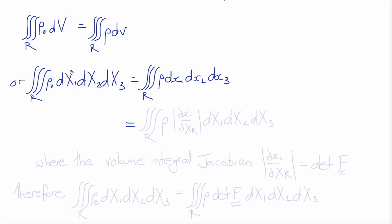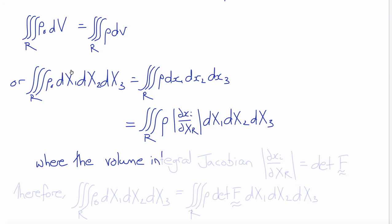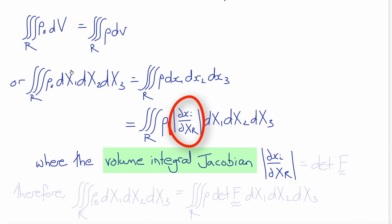We need to convert deformed coordinates to undeformed coordinates in our integral. We do that using the partial derivatives in a chain rule, del x_i / del X_R. The expression you get when converting from d(x_1) d(x_2) d(x_3) to d(X_1) d(X_2) d(X_3) is actually the determinant of del x_i / del X_R, which is known as the volume integral Jacobian. As you can see, it equals the determinant of the deformation gradient F.